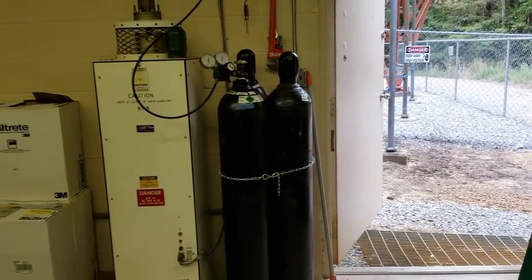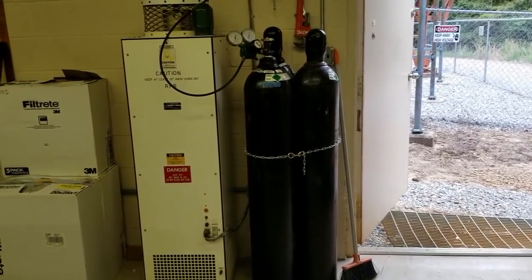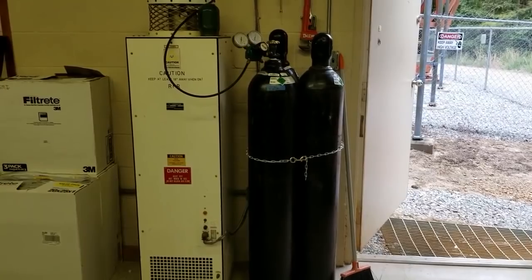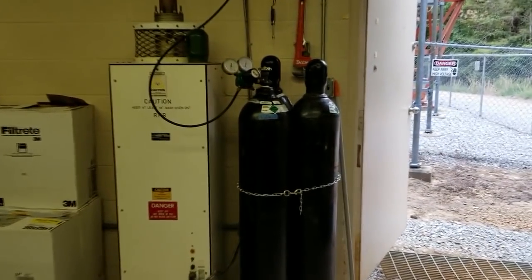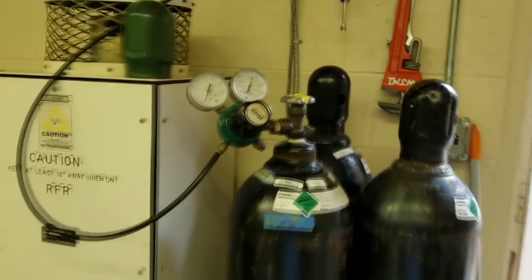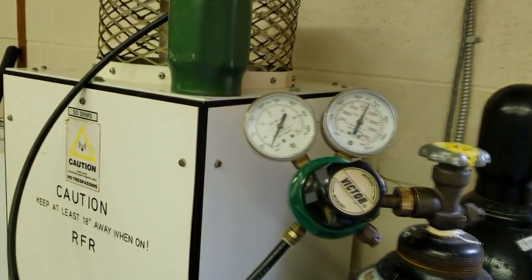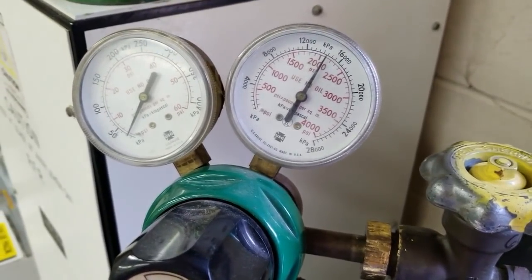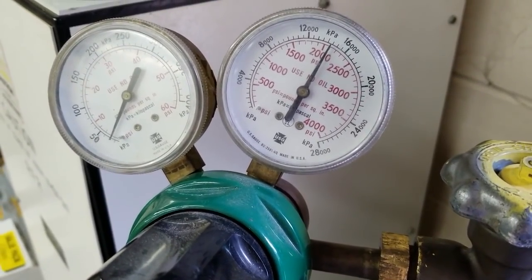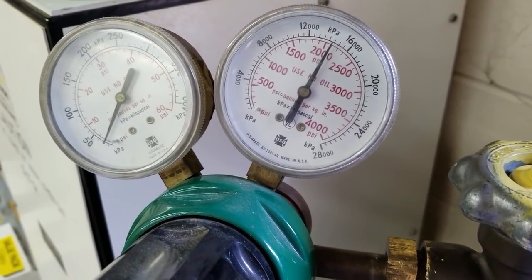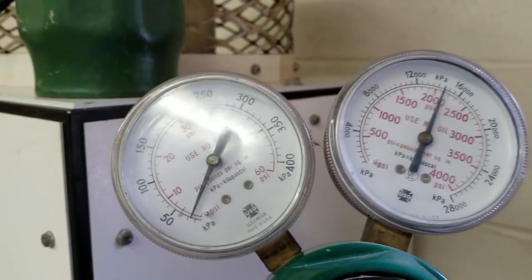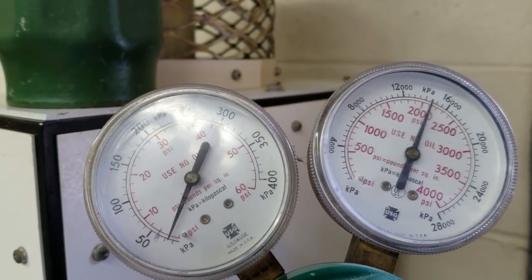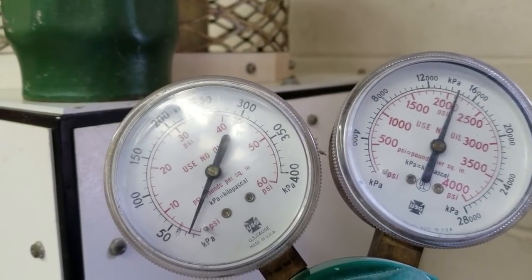And beside it, there are some nitrogen bottles. This transmission line is hollow, so we have to keep pressure on it to keep moisture from building up inside of it and arcing over. We keep it low pressure. This is about 2.5 pounds in the line and about 2,100 pounds remaining in that tank there. So a tank lasts a pretty good while as long as we don't have a bad leak in the line.